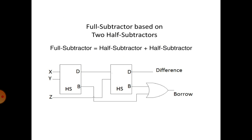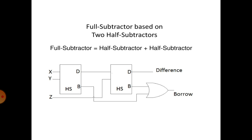This slide shows the full subtractor based on 2 half subtractors. Full subtractor is implemented by combining 2 half subtractors. Inputs are X and Y, D is the difference, and B is the borrow. HS means half subtractor. That is all about full and half subtractor. Thank you.